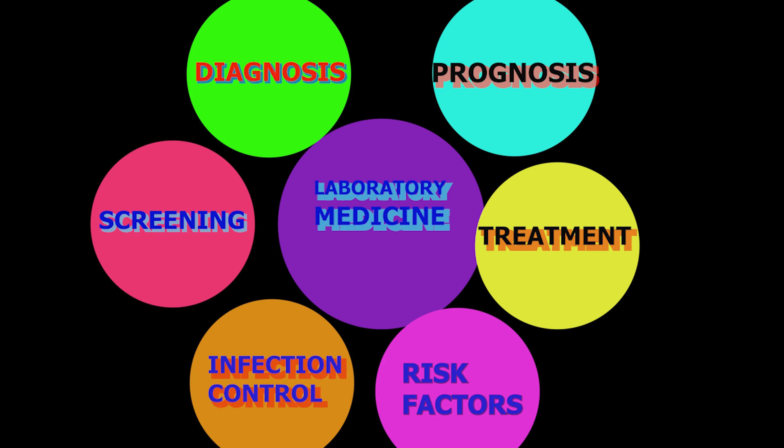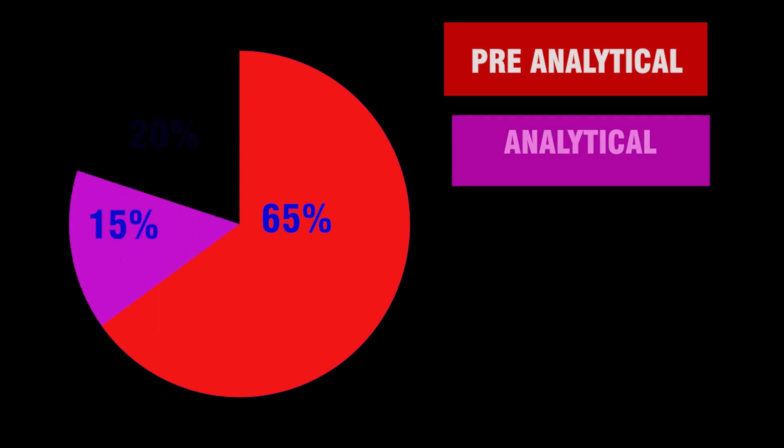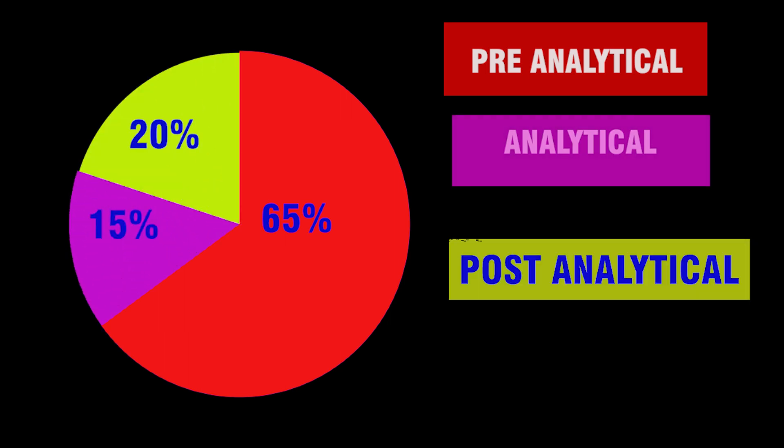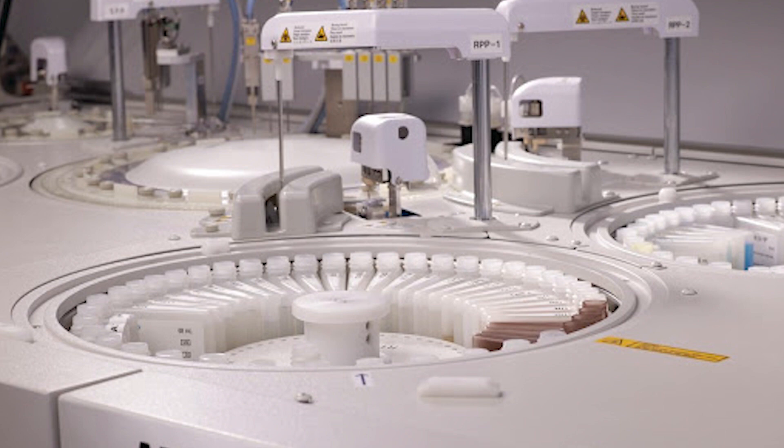About 0.3 percent is the total lab errors that includes pre-analytical, analytical, and post-analytical errors. Around 65 percent of lab errors are from the pre-analytical phase. Pre-analytical errors occur before the medical technologist gets the sample in hand.